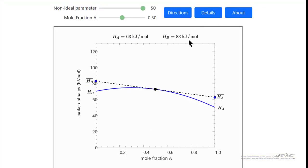Here's the interactive simulation. And you can see as I increase, for example, the mole fraction of A with the slider, you can see the partial molar quantity of A approaches the pure molar quantity of A, as you expect as you get to pure A.